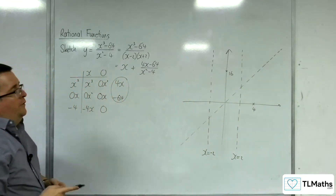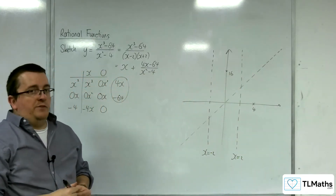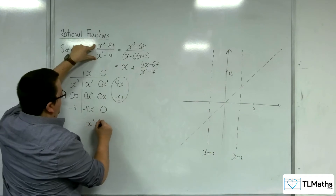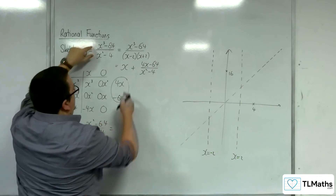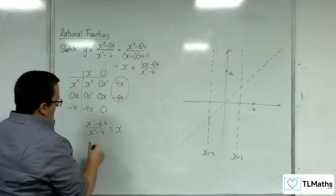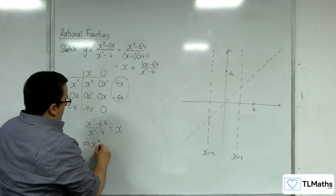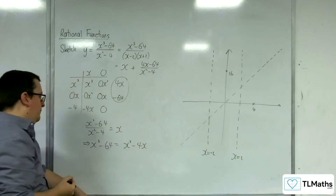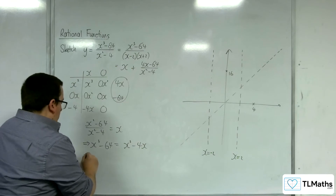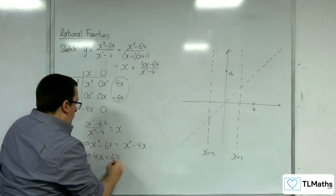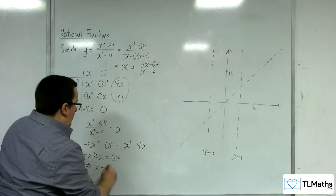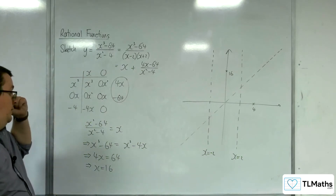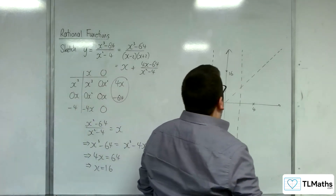Now we want to check whether the curve crosses the oblique asymptote. We set (x cubed − 64) over (x squared − 4) equal to x. So x cubed − 64 equals x cubed − 4x. The x cubed terms cancel, so 4x equals 64, meaning x equals 16. So yes, the curve does cross the oblique asymptote when x equals 16.